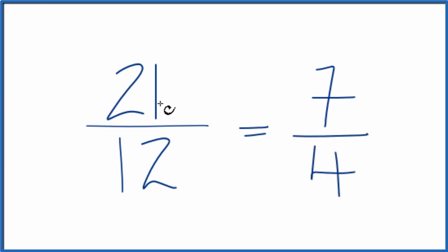So 21 over 12, the fraction equals 7 over 4. These are equivalent. Divide 21 by 12 or 7 by 4, you'll get the same number.